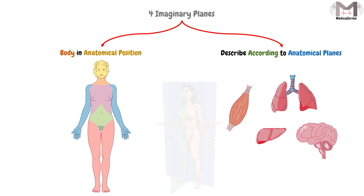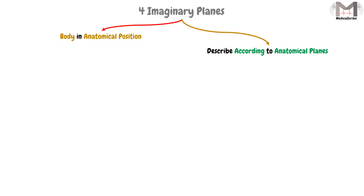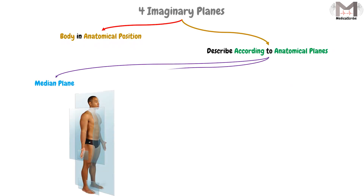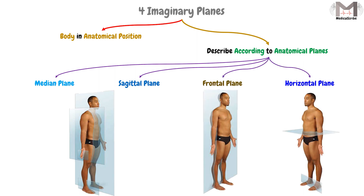These anatomical planes are 4, which are: the median plane, the sagittal plane, the frontal plane, and lastly, the horizontal plane. And now, we will understand what each plane means.